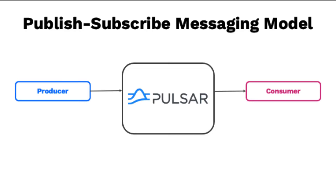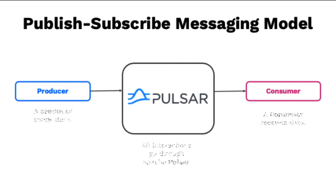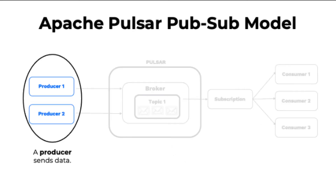Apache Pulsar is built on the publish-subscribe messaging pattern. In this model, the producer sends data or messages to the consumer. All interactions go through Pulsar, and the consumer receives data from the producer.